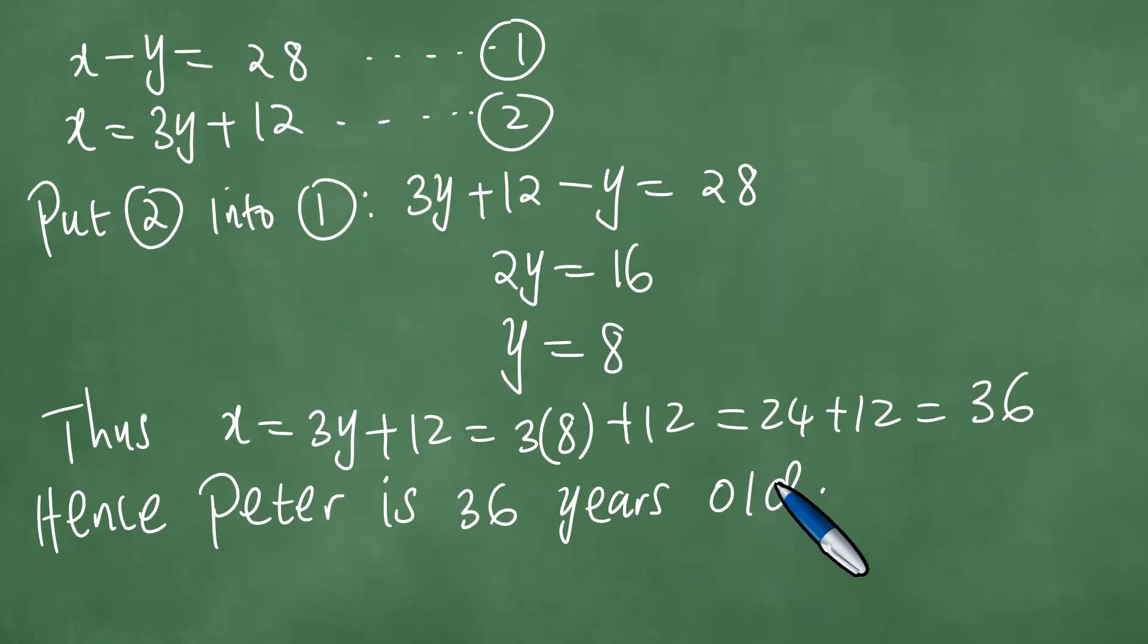They did not ask us to find, for example, John's age. But we note that, moreover, John's age is exactly y. So John is 8 years old.